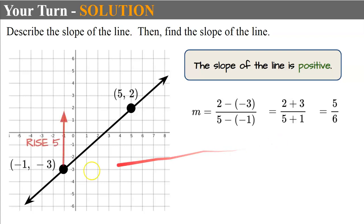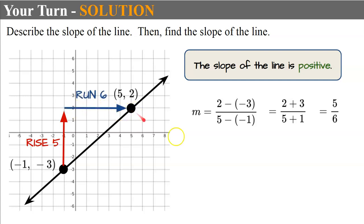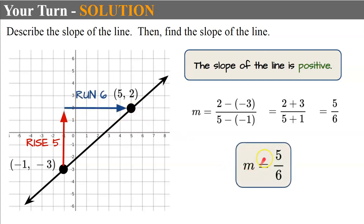Let's check it with rise over run. We rise 1, 2, 3, 4, 5 and run 6. So it checks out — rise over run, or our change in y over our change in x, confirms the slope is five-sixths.